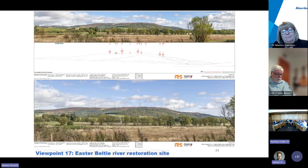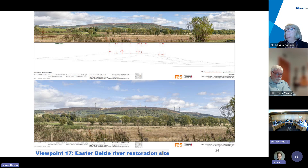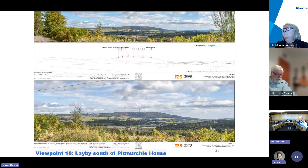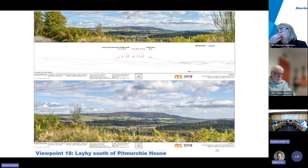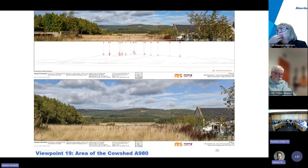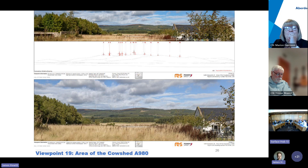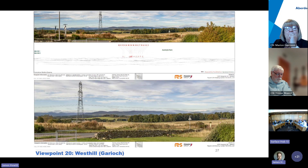Slide 24 shows viewpoint 17, 3.9 kilometers from turbine 5 taken from the southwest, where prominence of turbines over the ridge line is notable. Slide 25 shows viewpoint 18, 7.2 kilometers to the west, again with visibility along the ridge. Viewpoint 19 is 4.8 kilometers to the south, notable for the scale of the turbines.